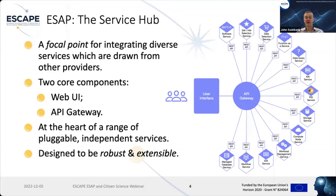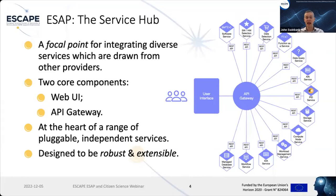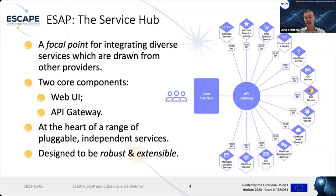That user interface talks to what we call the API gateway — a hub that acts as a broker between a variety of different services in the ESCAPE project ecosystem or on the wider scientific internet. Those services can take many forms: accessing software and data, compute services, generating persistent identifiers, performing user authentication and authorization. We make it possible for users to add new services to ESAP through a plugin system, making ESAP a very extensible system.